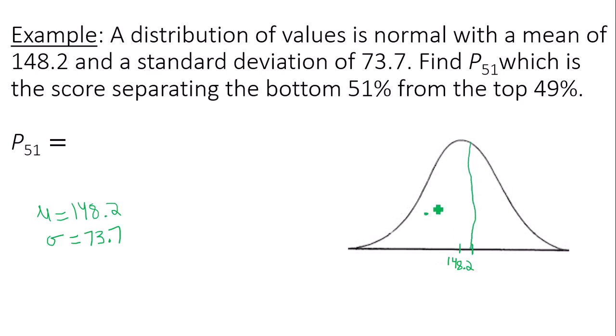51% of the data from 49% of the data, or 0.51 from 0.49. The data value I'm trying to find, I'll call it X, is the data value whose area to the left is 0.51.